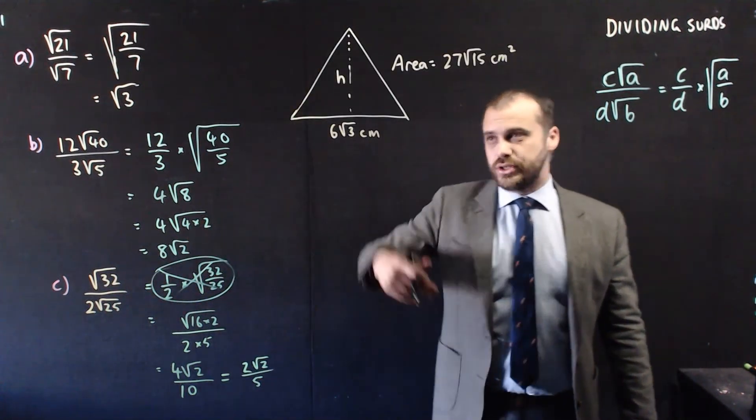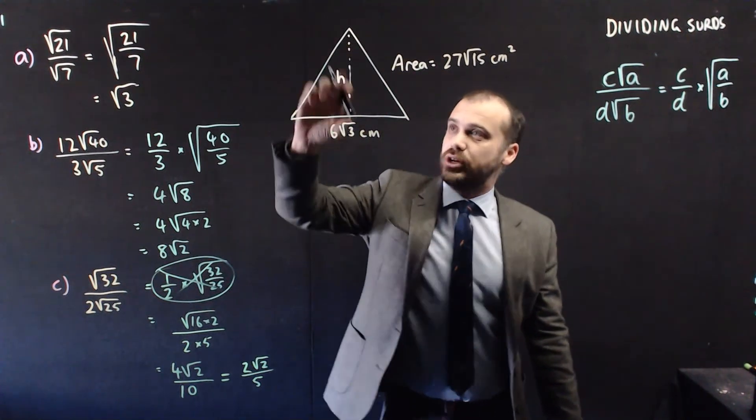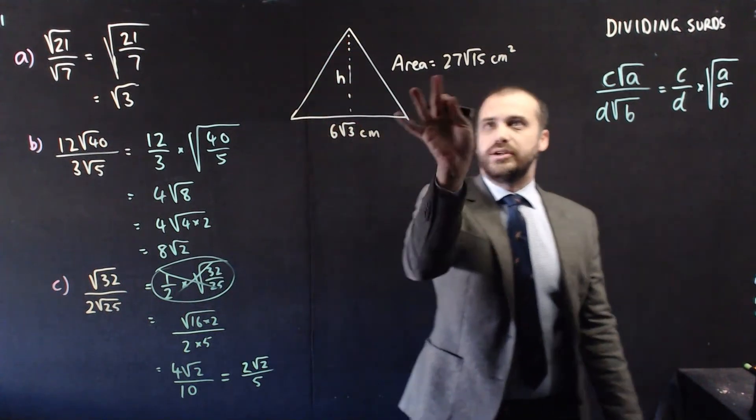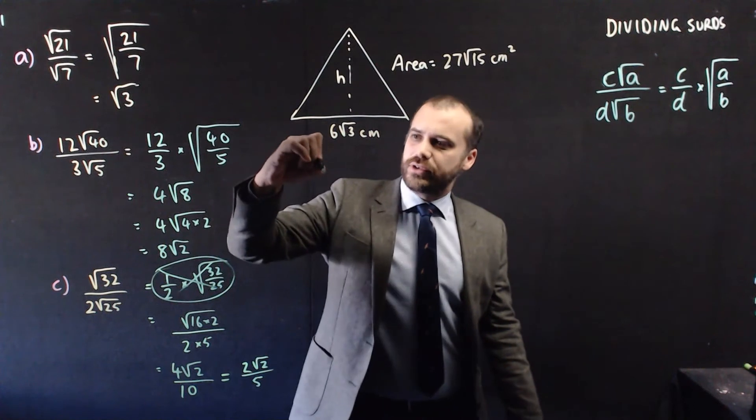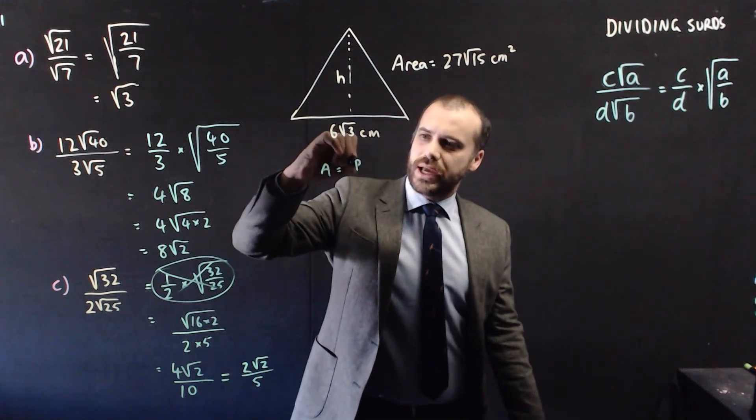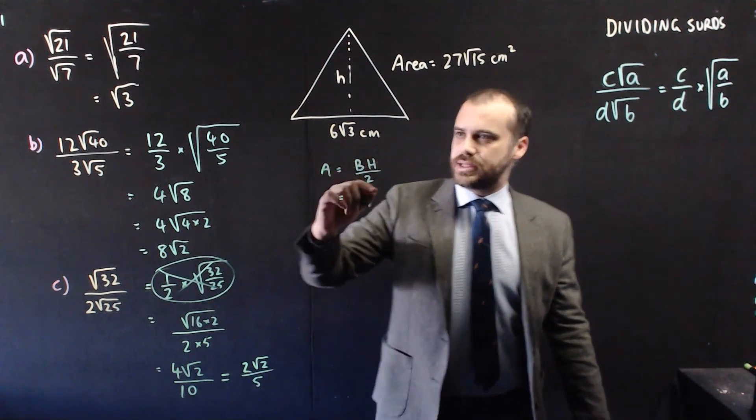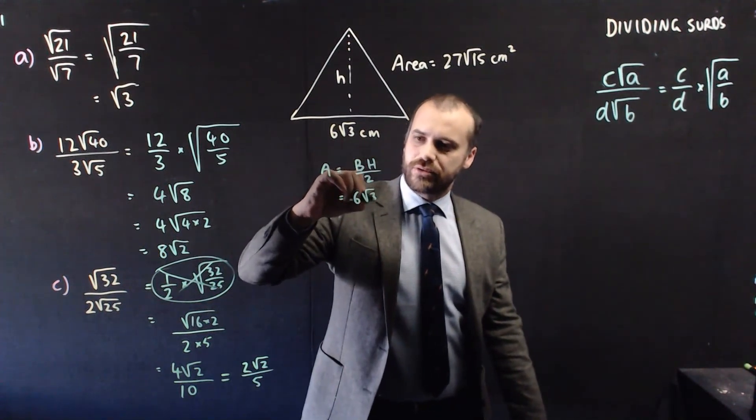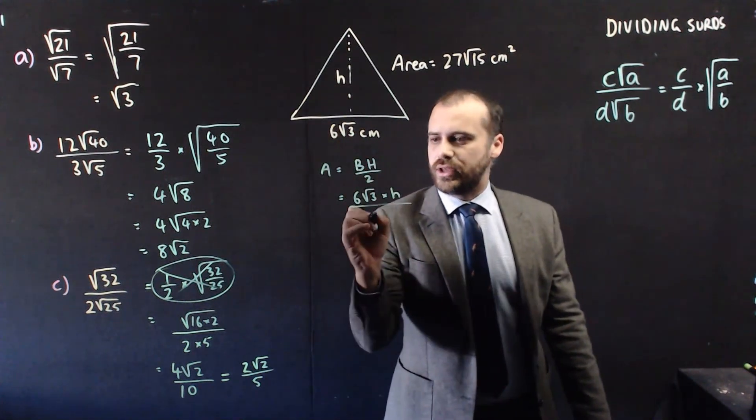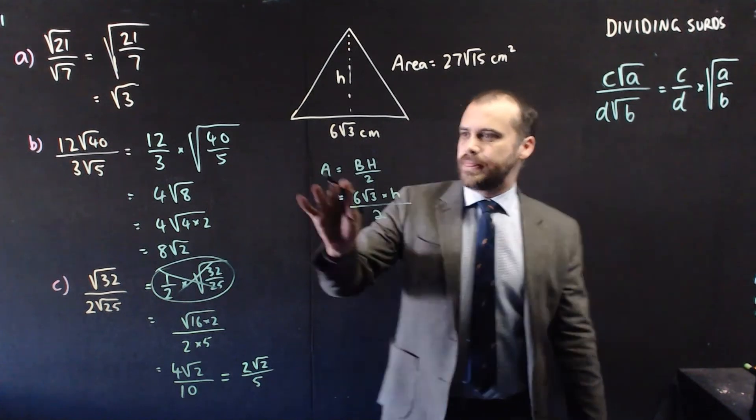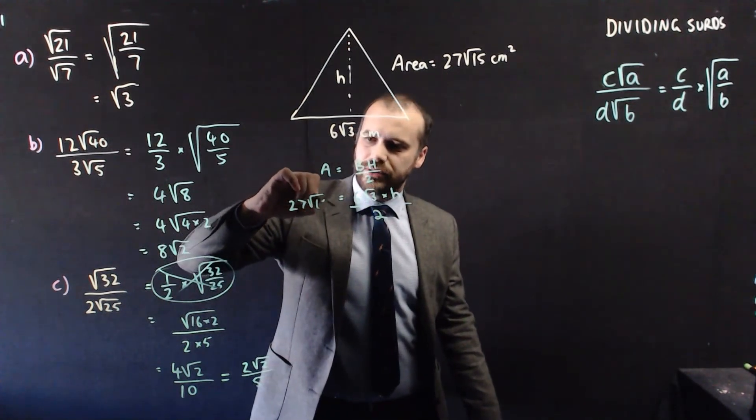And of course, once you can do division, you can do questions that look a little bit like this. Here's a triangle. I don't know the perpendicular height. I know the base, and I know the area. Let's find the height. Now we know that the area of a triangle is equal to base times height over 2. Now we know that the base is 6 root 3. We don't know what the height is, but we would really like to know it. And we can divide all of that by 2. So, we know the area is 27 root 15.